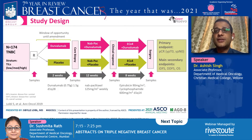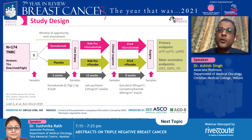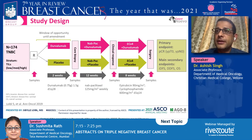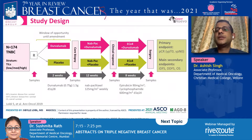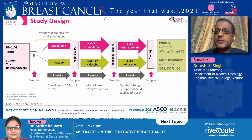In the trial design, just after randomization for the first two weeks, there was a window of opportunity — a run-in period where only Durvalumab was given. Subsequently, a repeat biopsy was performed, and then patients started on standard chemotherapy, which was weekly paclitaxel for 12 weeks followed by dose-dense EC times four. The randomization was Durvalumab 1500 mg versus placebo.